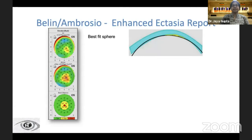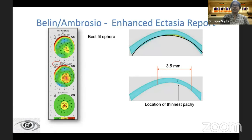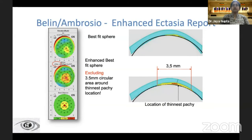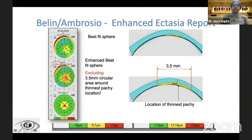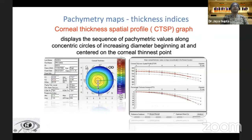Schematically, once we have isolated the thinnest location, the enhanced best-fit sphere makes the cone more obvious. In the last row, where the difference map is red, values beyond 7 microns on the anterior surface are flagged, and on the posterior surface, beyond 16 microns is again a red flag.